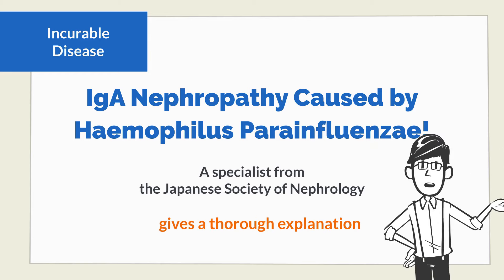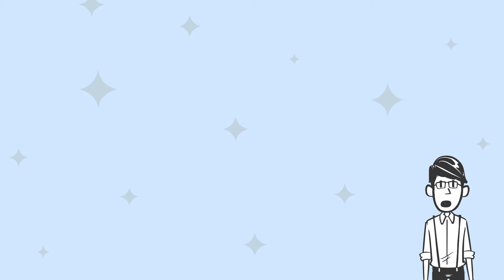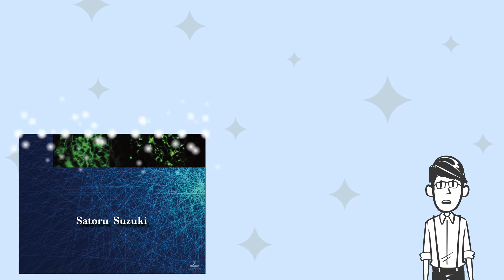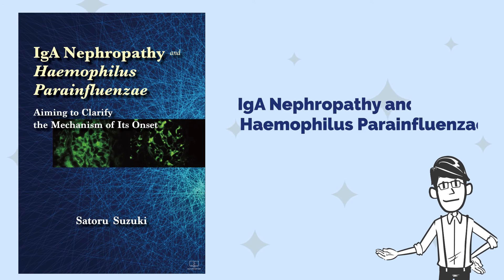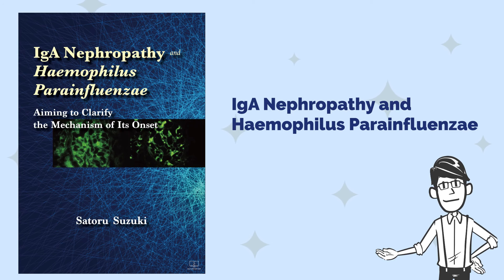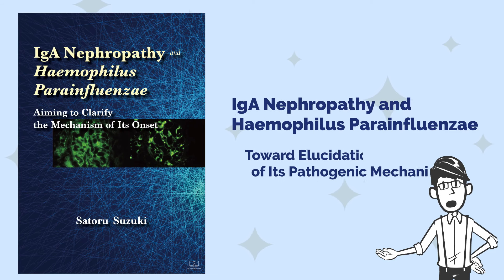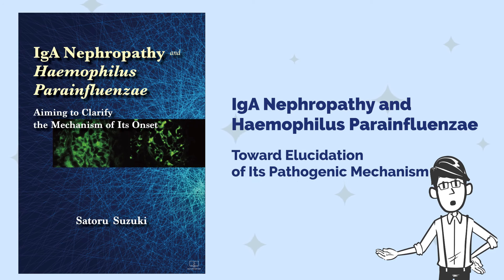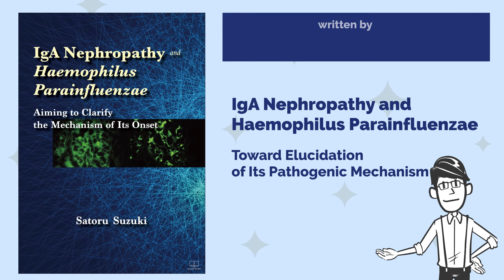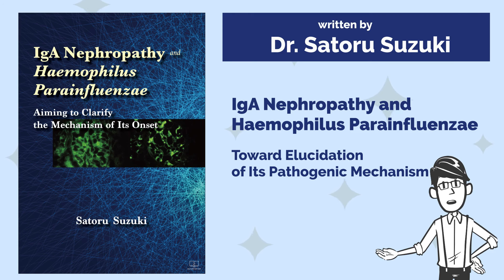Here is the book I used as a reference: IgA Nephropathy and Haemophilius Parainfluenzae — Toward Elucidation of its Pathogenic Mechanism, written by Dr. Satoru Suzuki.